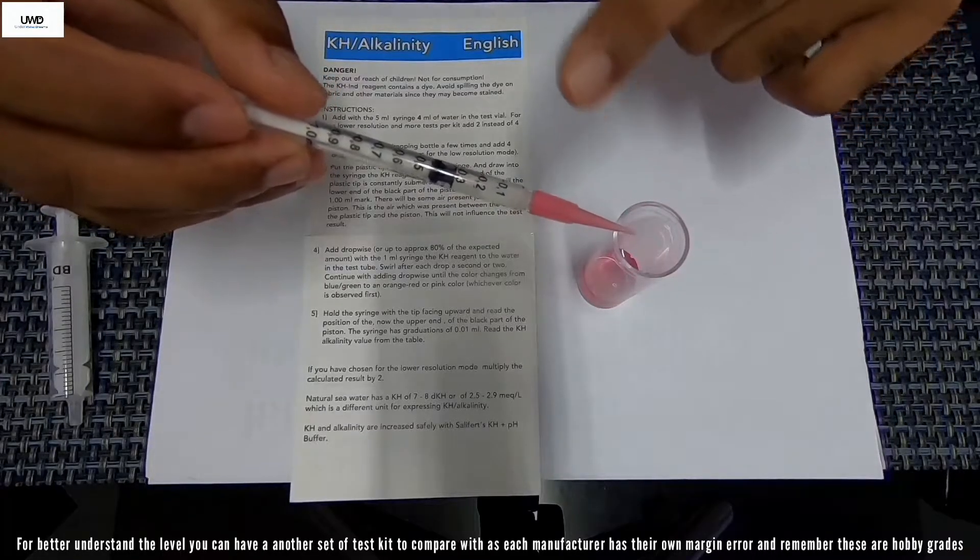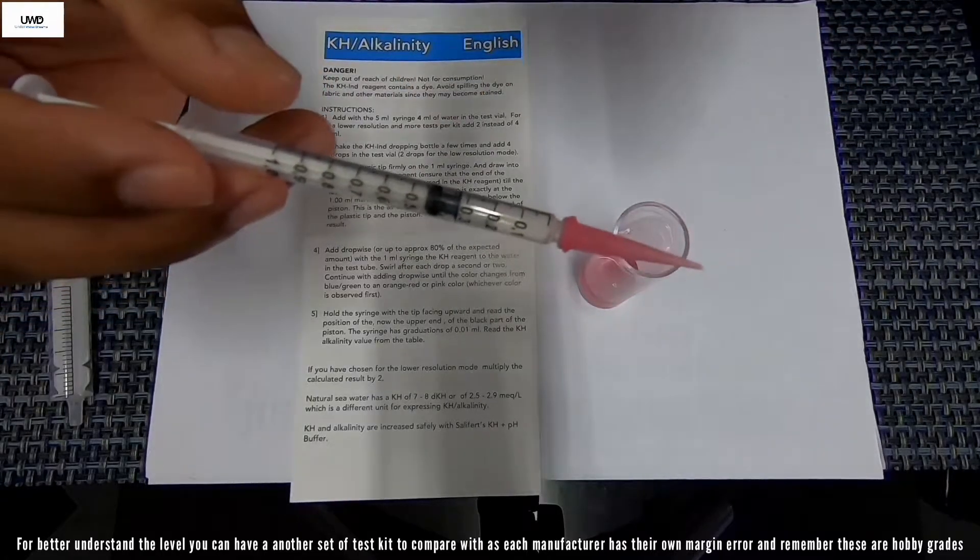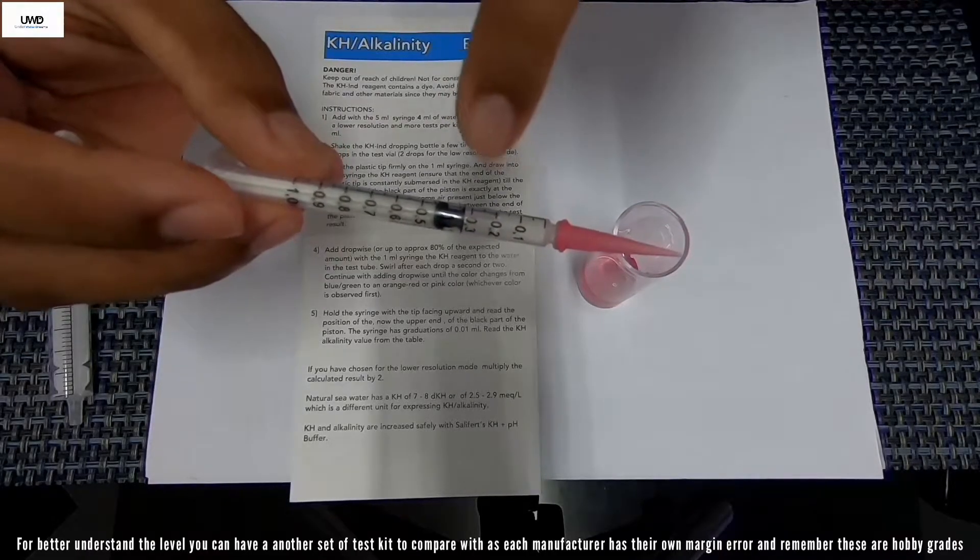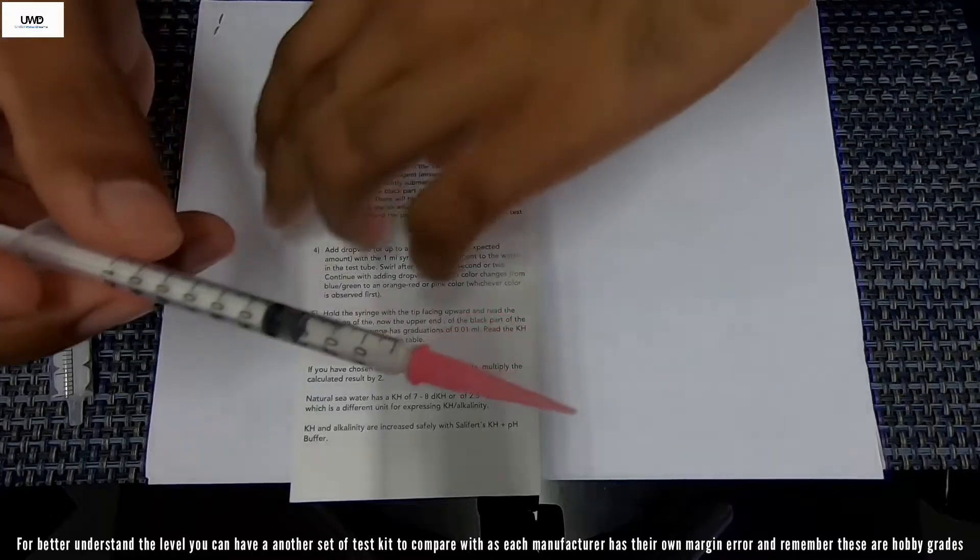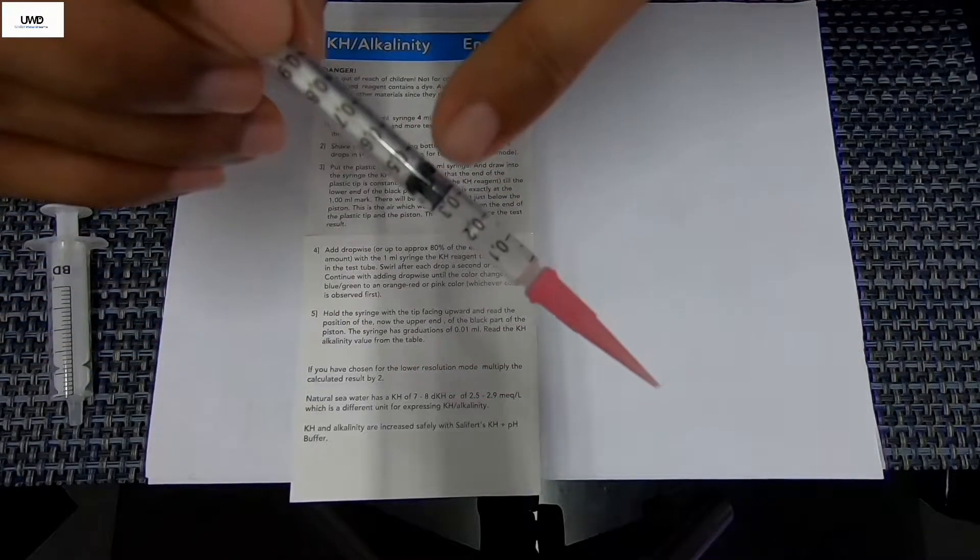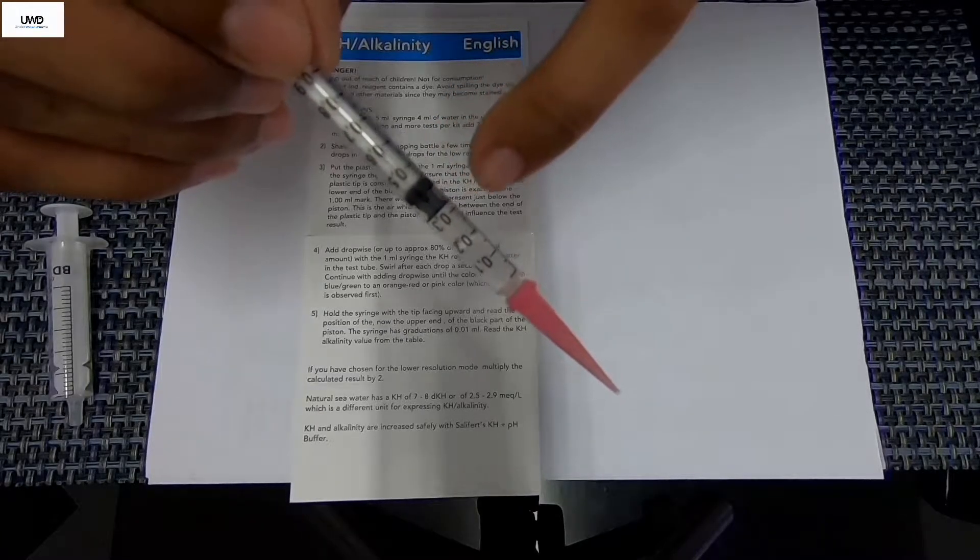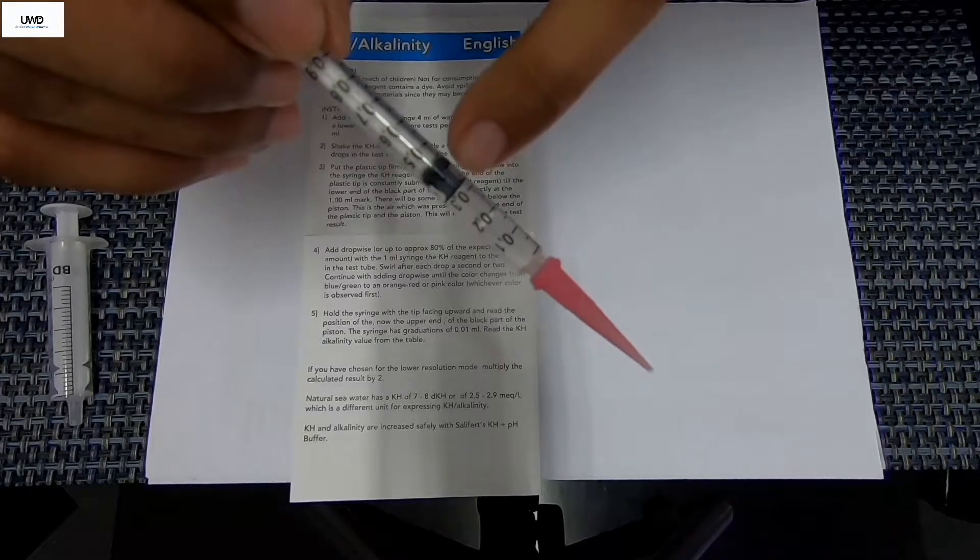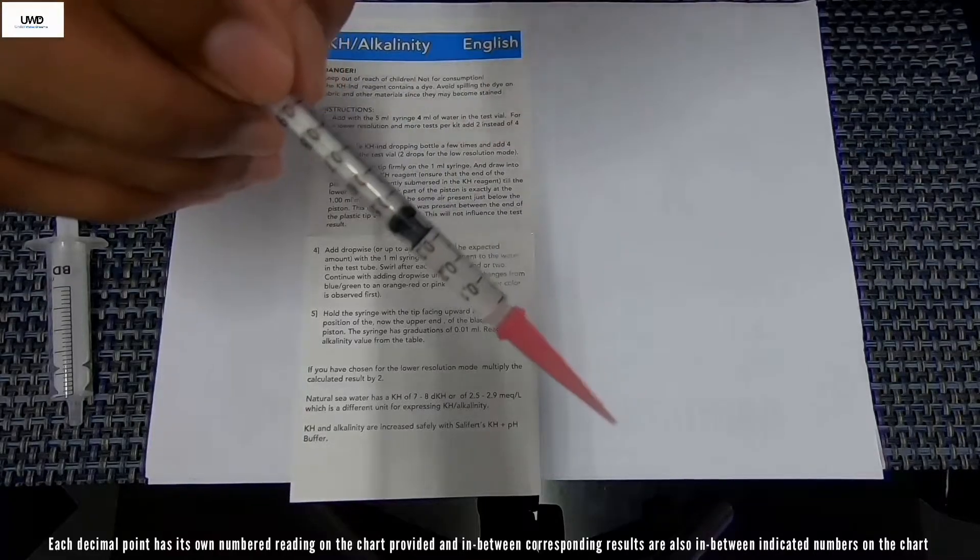You want to get the color of this to this nozzle color, pink color or same color matching. Now we're going to be reading this indicator and how much we have used and what we have got in the level. You're going to read the main measurements from the end of plunger. Remember I told you, this is the plunger reading. There's about 0.3, 3.2, 3.4.